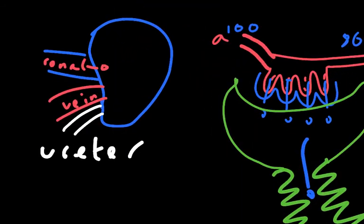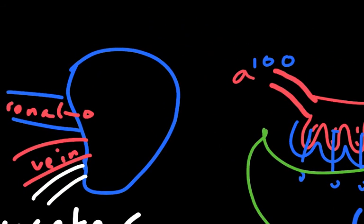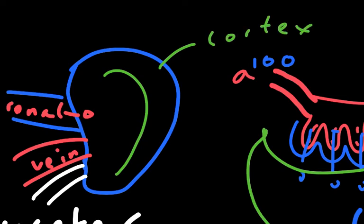So if we look at our kidney here, this part here is called the cortex, and then the region below that is called the medulla.